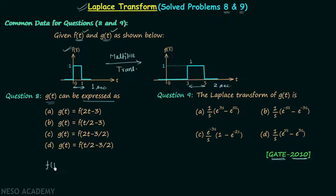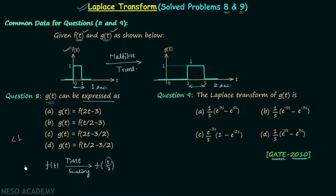Starting with signal f(t), we will perform the time scaling operation by 1/2. We are multiplying by 1/2 because expansion is happening, and whenever there is expansion of a signal we multiply t by a number which is less than 1 but greater than minus 1, excluding 0. We multiply by 1/2 because we need the duration to be double compared to the original.